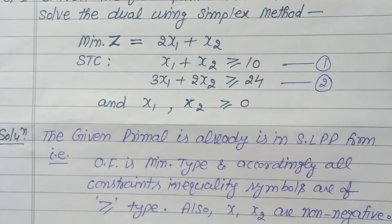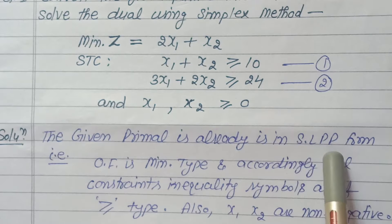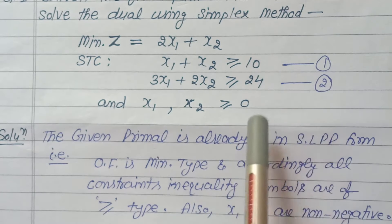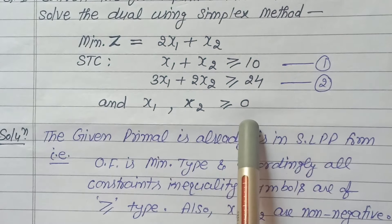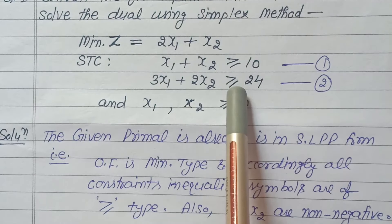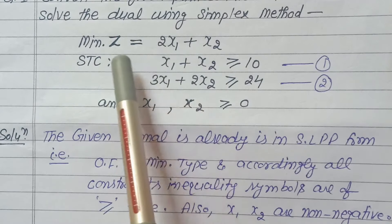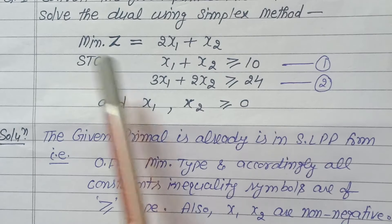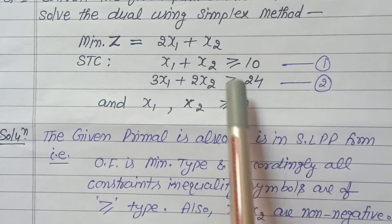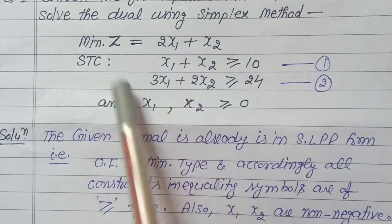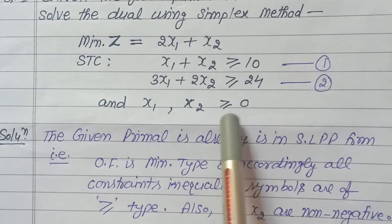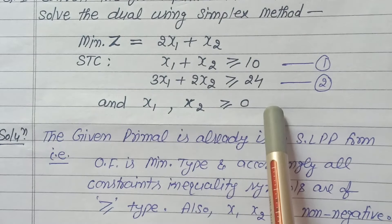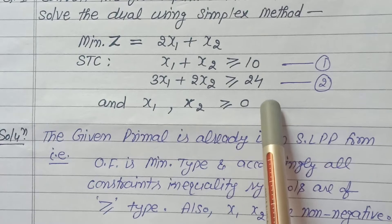The given example is already in standard LPP form. To convert a primal into dual, first we must convert the primal into standard form. This numerical is already in standard LPP because the constraint equations match the objective function type — the objective function is minimization and the constraint symbols are greater than or equal to zero, which is the requirement. Also, both x1 and x2 are greater than zero.